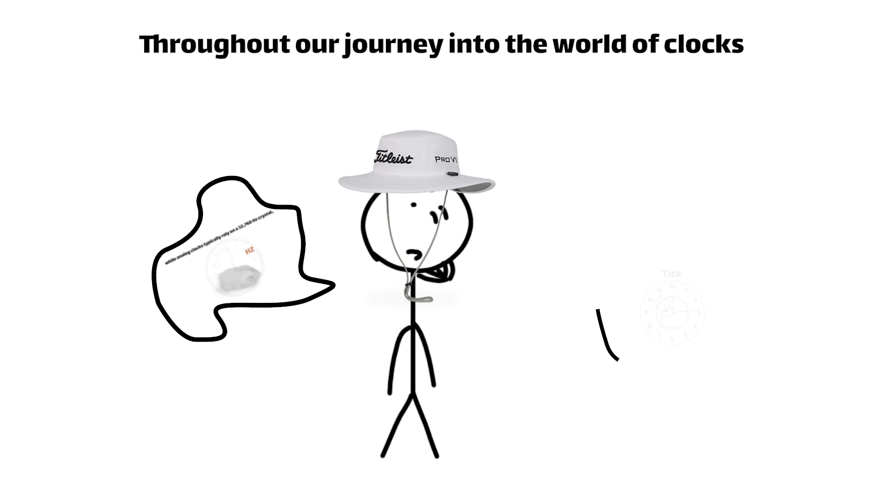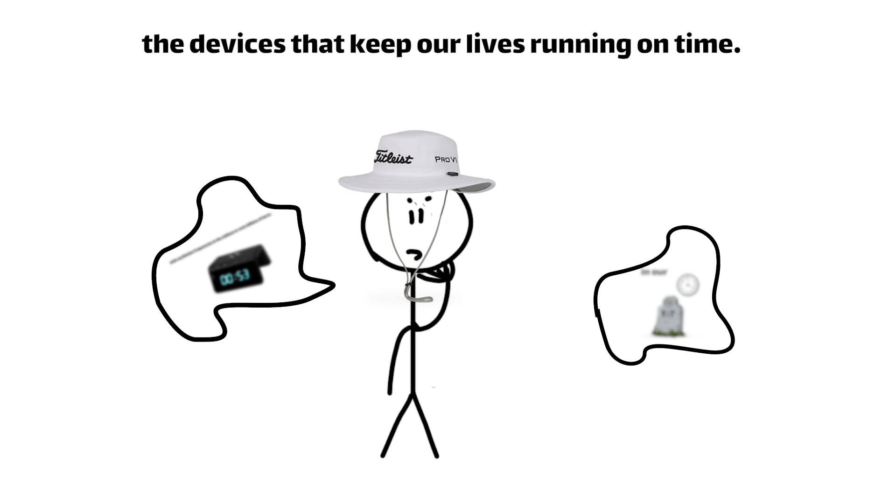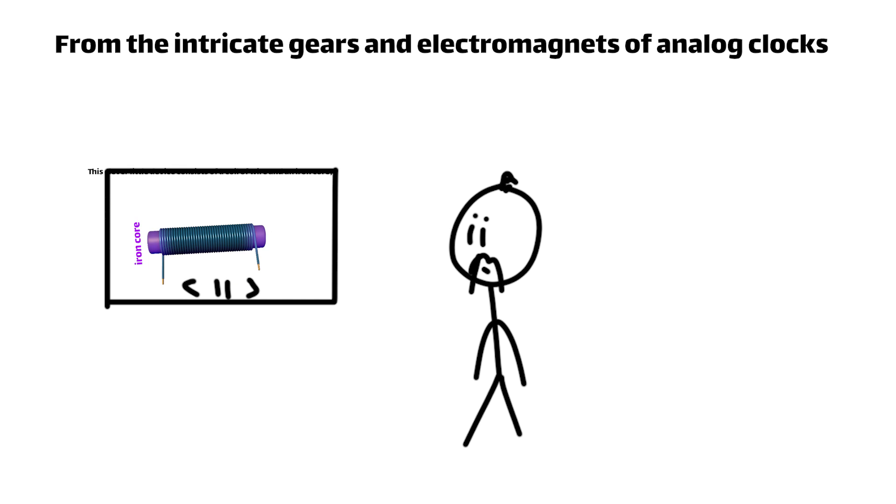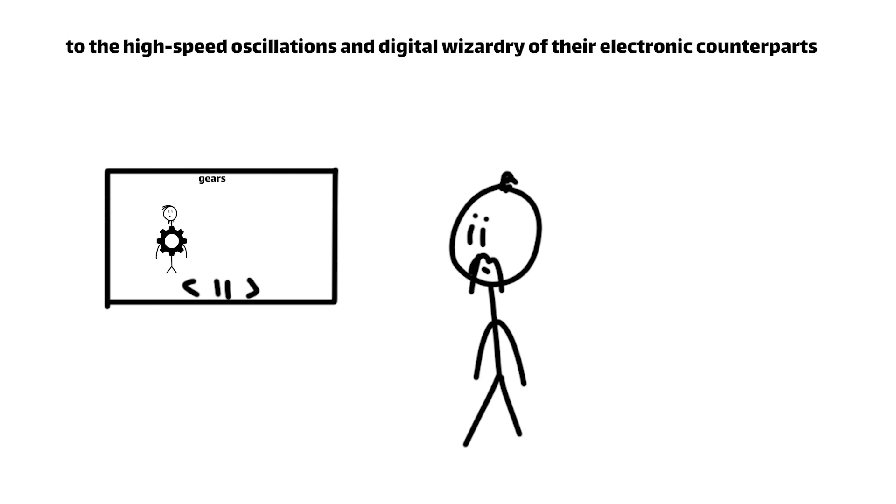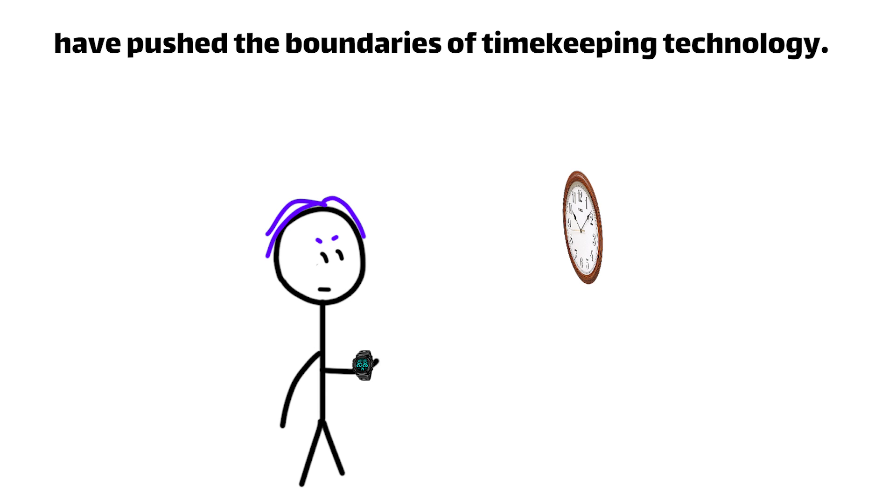Throughout our journey into the world of clocks, we've uncovered the fascinating secrets behind the devices that keep our lives running on time. From intricate gears and electromagnets of analog clocks, to the high-speed oscillations and digital wizardry of their electronic counterparts, we've seen how generations of engineers and inventors have pushed the boundaries of timekeeping technology.